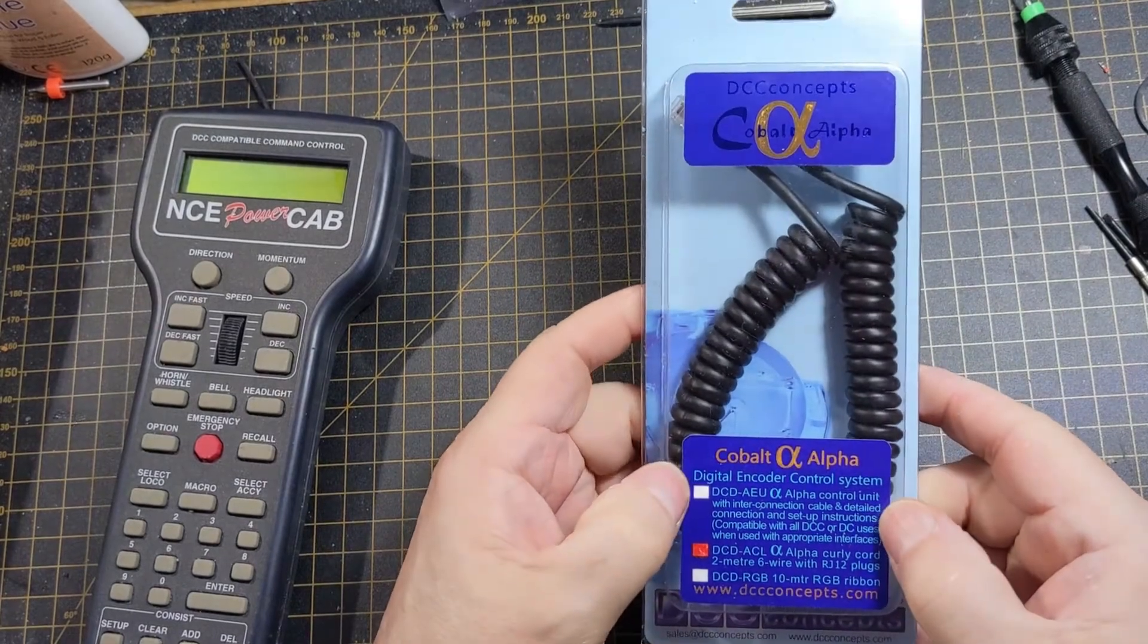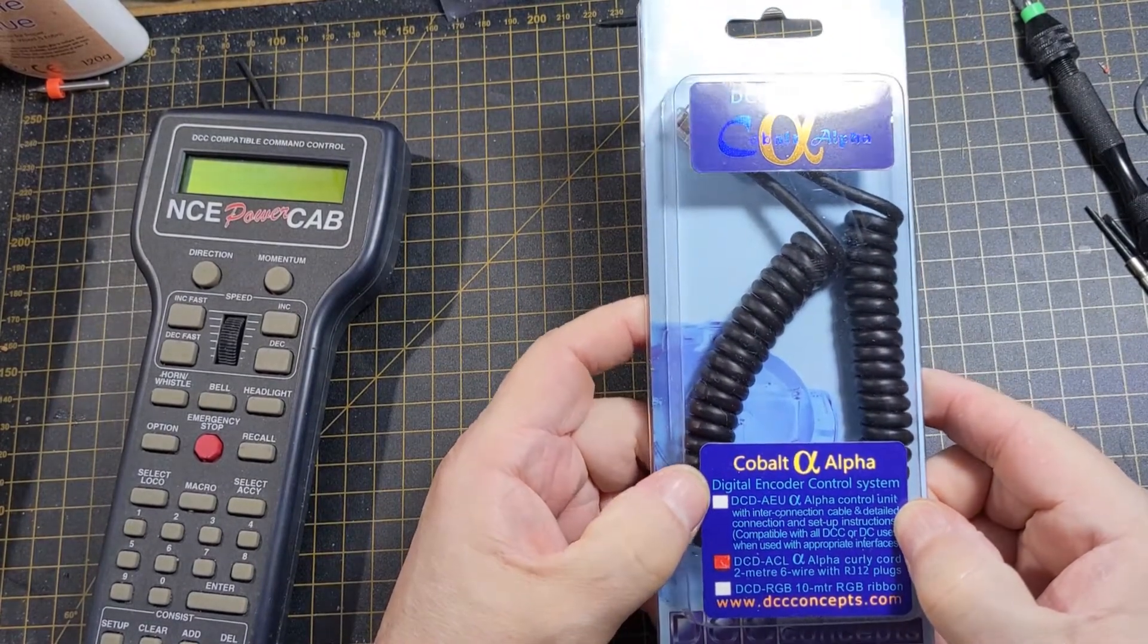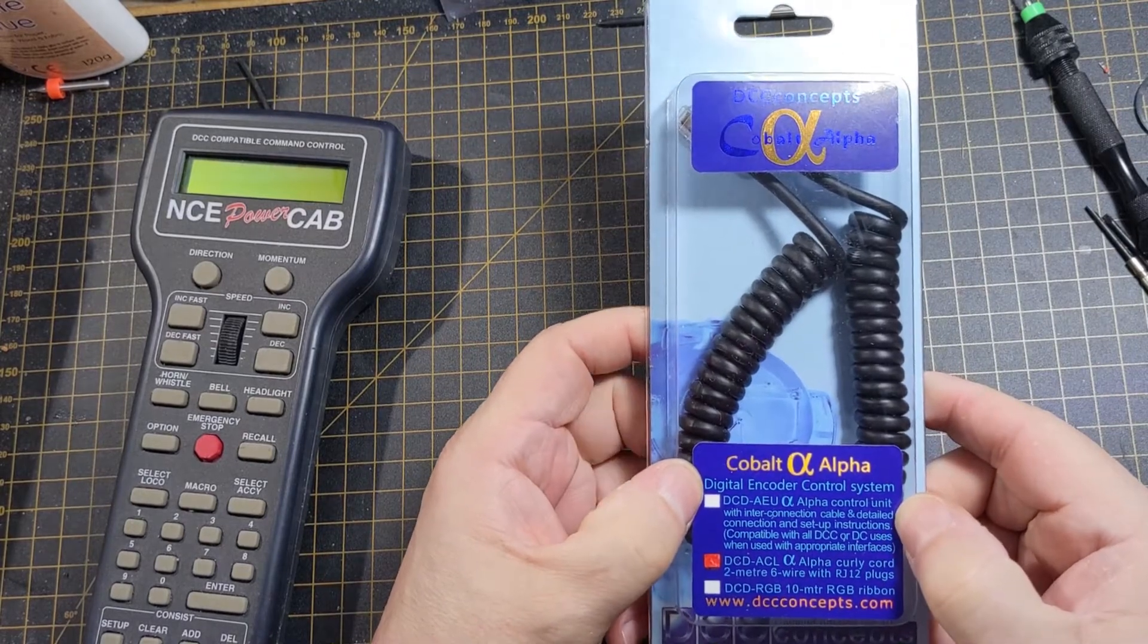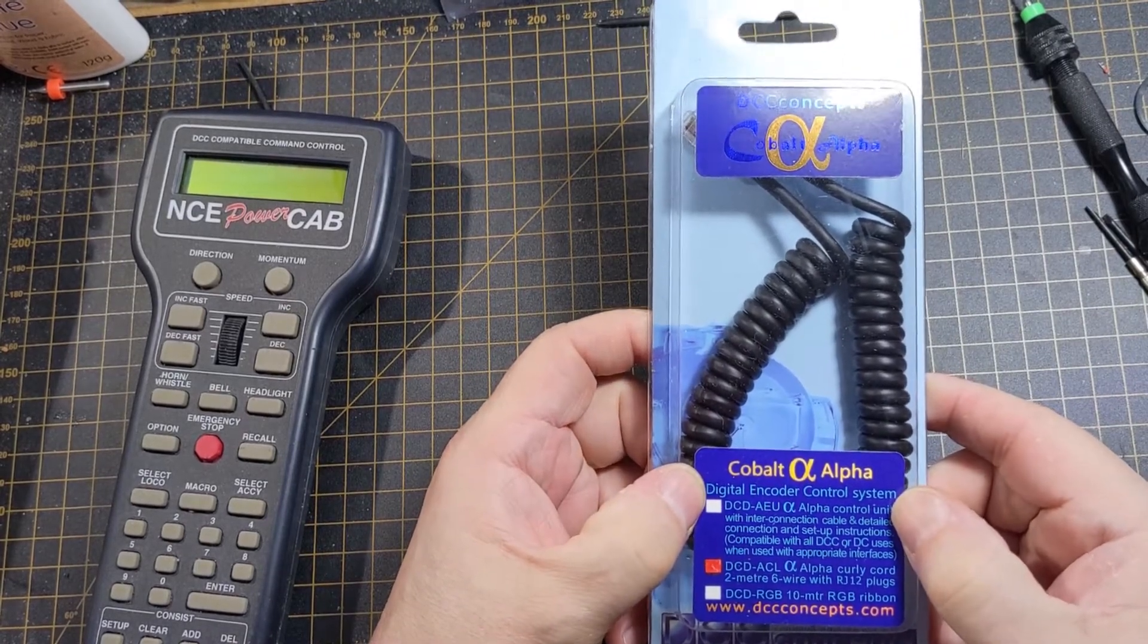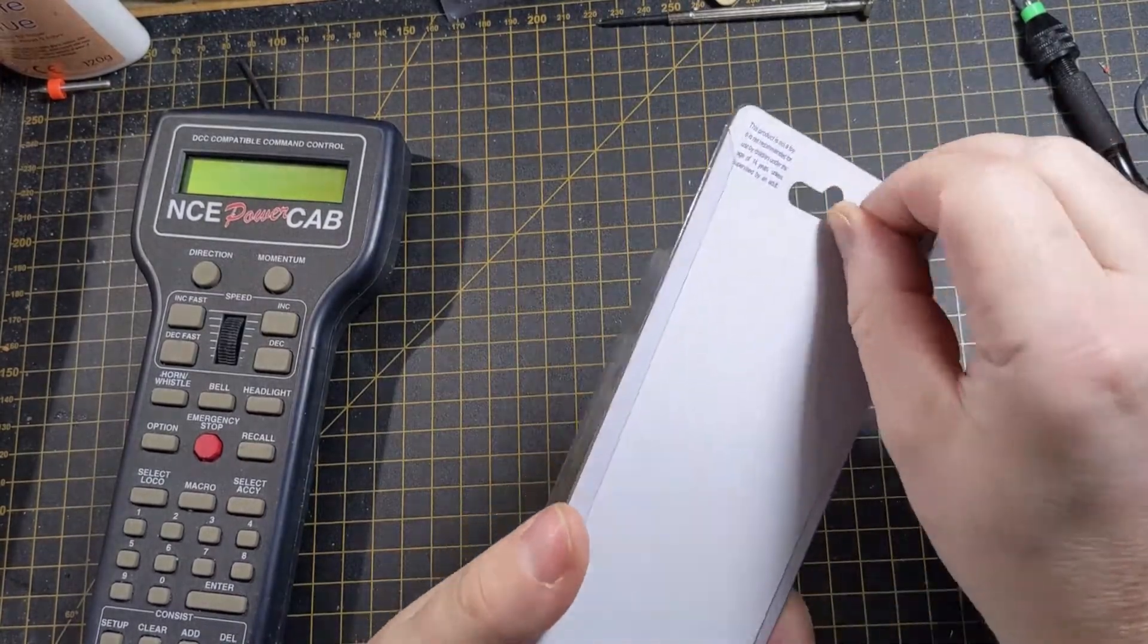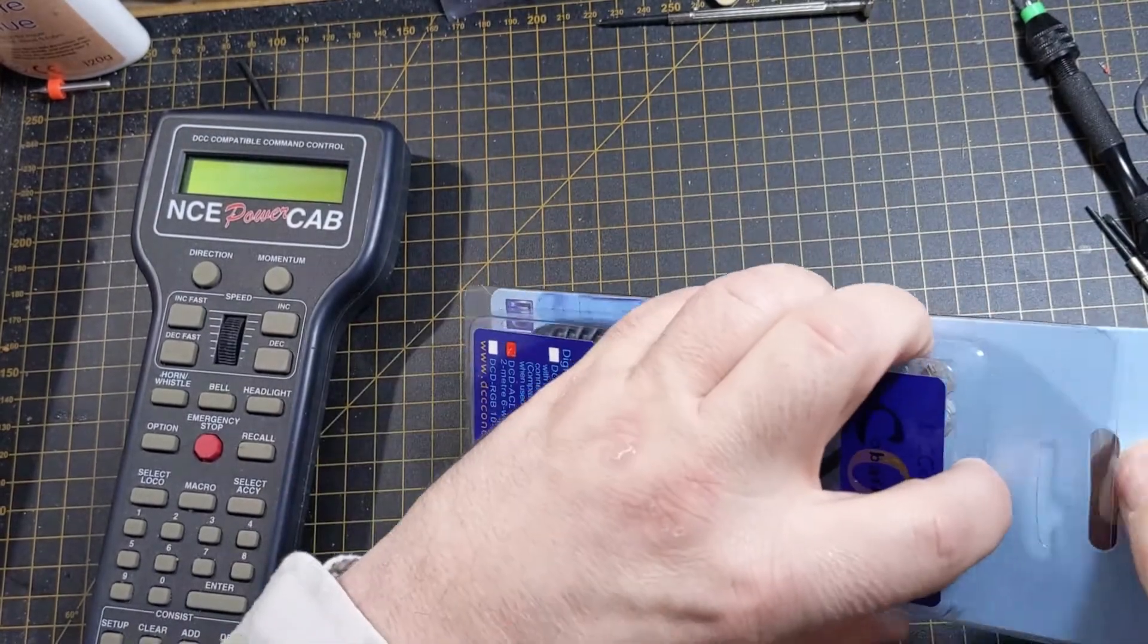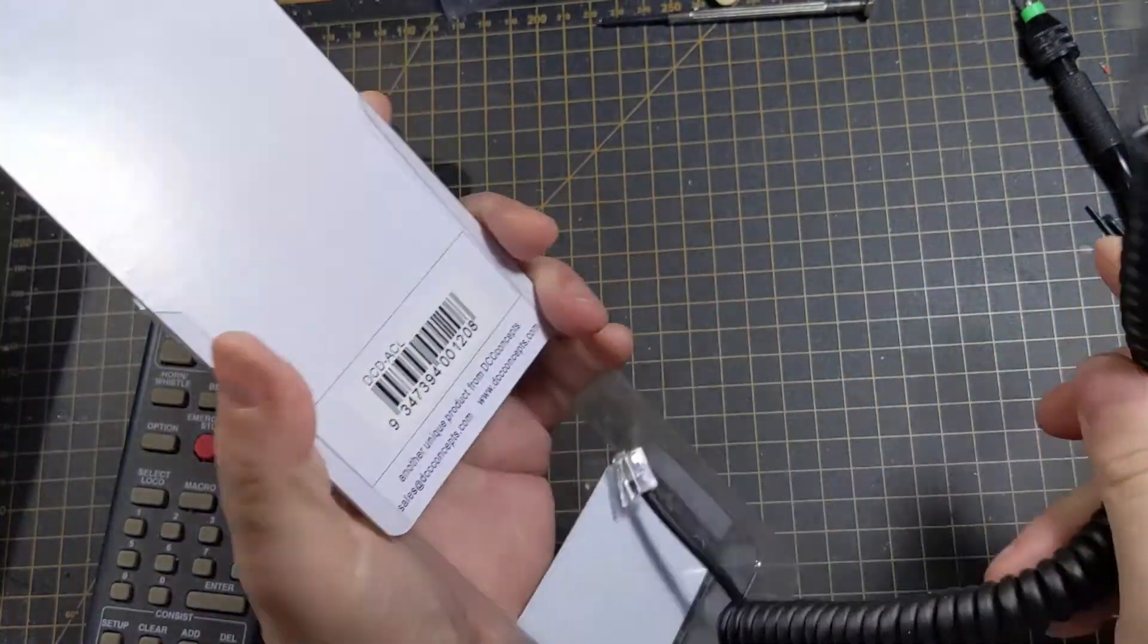So DCC Concepts have brought out this. It's a special curly cable. It's designed to go with their Cobalt Alpha range, but they also recommend it for use with the NCE power cab. And this is what you get. Nice and easy.